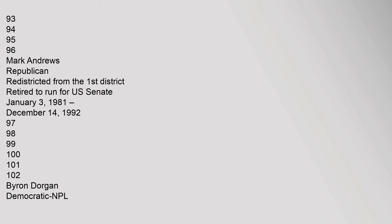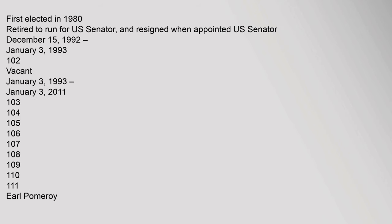From January 3, 1973 to January 3, 1981 (93rd–96th Congresses): Mark Andrews, Republican, redistricted from the 1st District, retired to run for U.S. Senate. From January 3, 1981 to December 14, 1992 (97th–102nd Congresses): Byron Dorgan, Democratic-NPL, first elected in 1980, retired to run for U.S. Senate and resigned when appointed U.S. Senator.